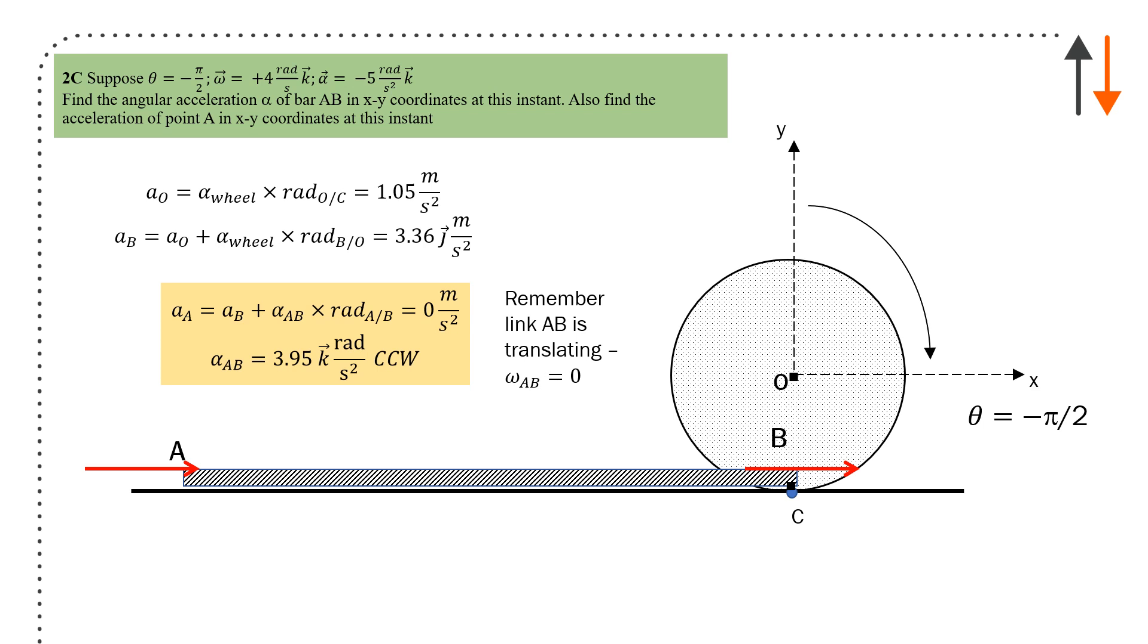Adding terms together, acceleration A equals acceleration B plus alpha AB cross with the radial distance A to B. You end up with zero and alpha AB, because it is going to start rotating upwards and move to the right, will have an angular acceleration alpha AB which is 3.95 k rads per second squared. This part of the problem is particularly difficult conceptually.